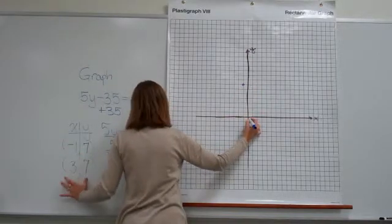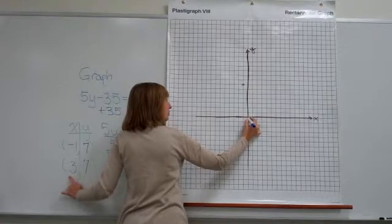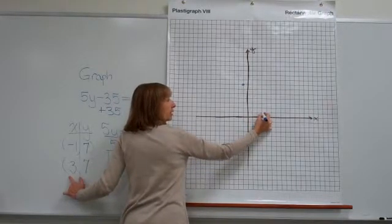For the next ordered pair, 3 comma 7, we will go right 3 and up 7.